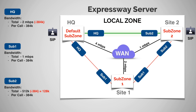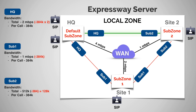Now let's say at the same time, we have another endpoint at headquarters calling an endpoint in subzone one. It follows the shortest path, going through the HQ pipe — so we deduct another 384k from that two meg allocated for HQ. Then it goes through the sub one pipe, deducting 384k from the one meg allocated for that. That call goes through and connects to subzone one.